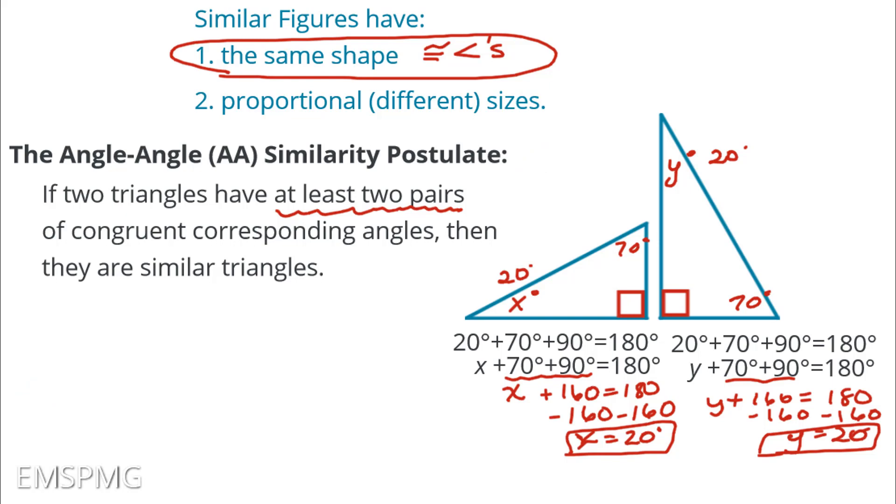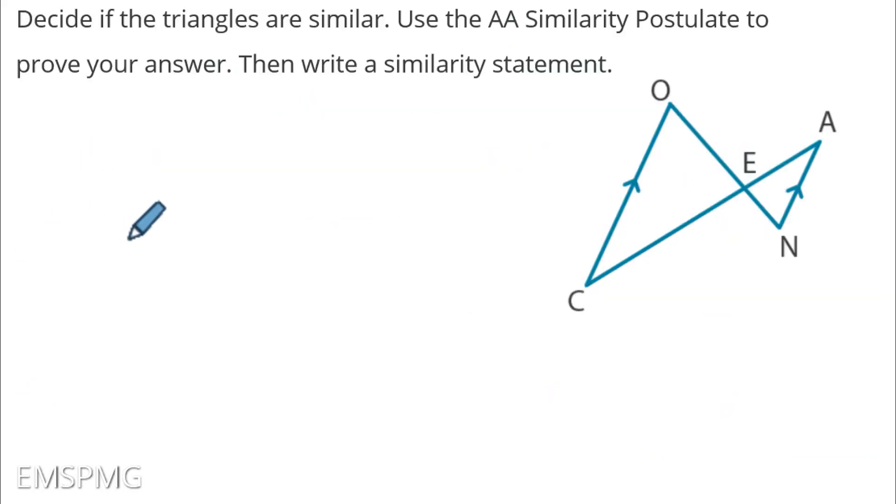So getting right into the question at hand, we need to decide if the triangles are similar. We're going to use the angle angle similarity postulate to prove our answer. Then we're going to write the similarity statement and make sure that we focus on that when we get to it. So first things first, I don't have any values. I have no measurements in this triangle. So I'm going to go through my box of tricks, make sure that I know all of the different types of angle relationships possible. The first thing I'm noticing, the only thing that's really given to us in this diagram, is that these are parallel lines.